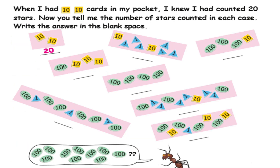When I had 10 cards in my packet, I knew I had counted 20 stars. Now tell me the number of stars in each case. Answers: 20, 26, 310, 130, 400, 603, 316, 430. Thank you.